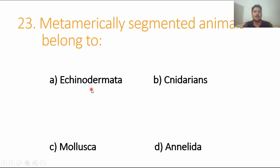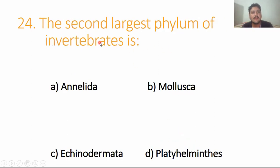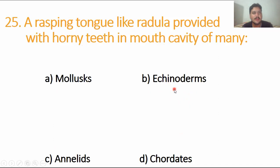Metamerically segmented animals belong to Annelida. The second largest phylum of invertebrates is Mollusca. Mollusca, which is soft bodied animals. The largest is Arthropoda, the first largest, and the second largest is Mollusca. Option B is the right answer.